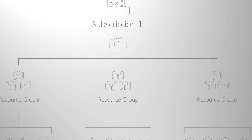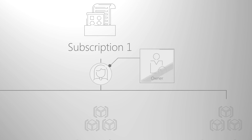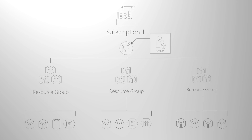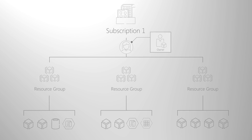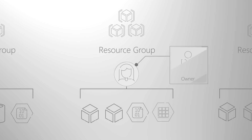For example, if you've been assigned the owner role at the subscription scope, then you have full access to all the resource groups and resources within that subscription. If you've been assigned the owner role at the resource group scope, then you have full access to all resources within that specific resource group. You can manage role assignments using the portal, command line tools, and the Azure Resource Manager API.